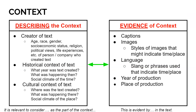When we're describing the context, we should think of a few things. First, the creator of the text — we're considering age, race, gender, their socioeconomic status, what faith they have, political views, really anything that affects belief or lifestyle.